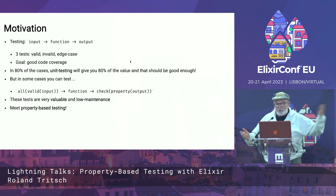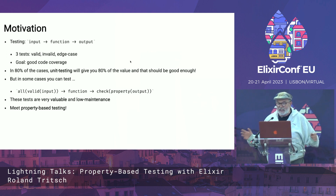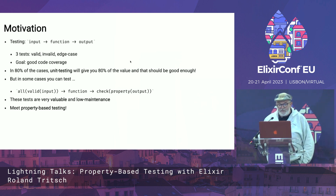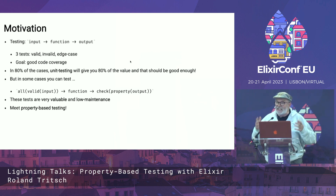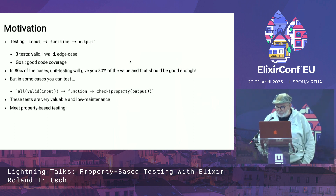Motivation: when we do testing, we obviously have input values and we have a function. We get output, and we're looking for valid test cases, invalid test cases, edge cases. We are looking for good code coverage. In 80% of the cases, the unit testing that you do will give you 80% of the value, and that should be good enough. But in some cases, you can actually test something more interesting — you can test all valid input values through the function against a set of properties that the output should adhere to. That is very valuable, low maintenance, and creates good code coverage. So, meet property-based testing.